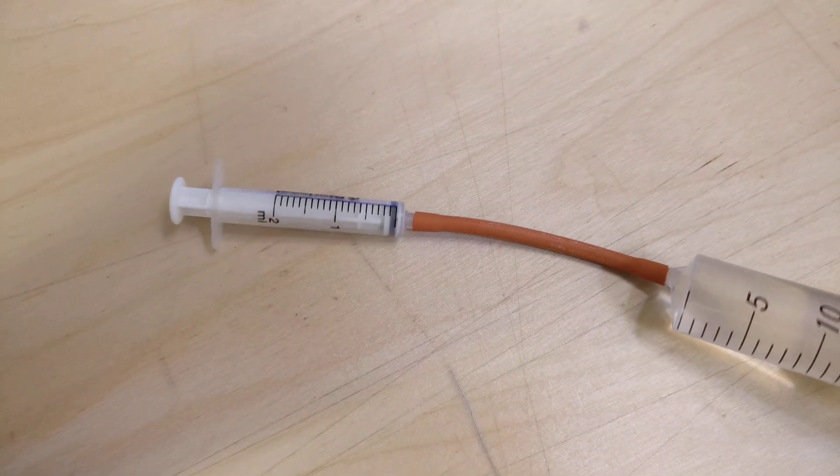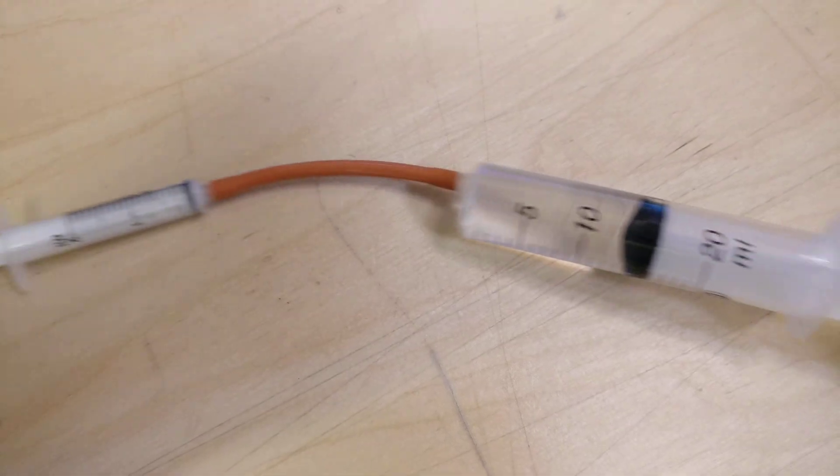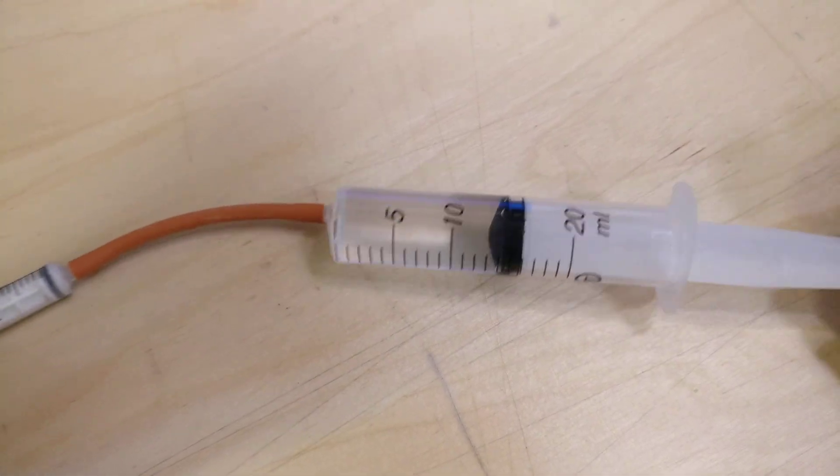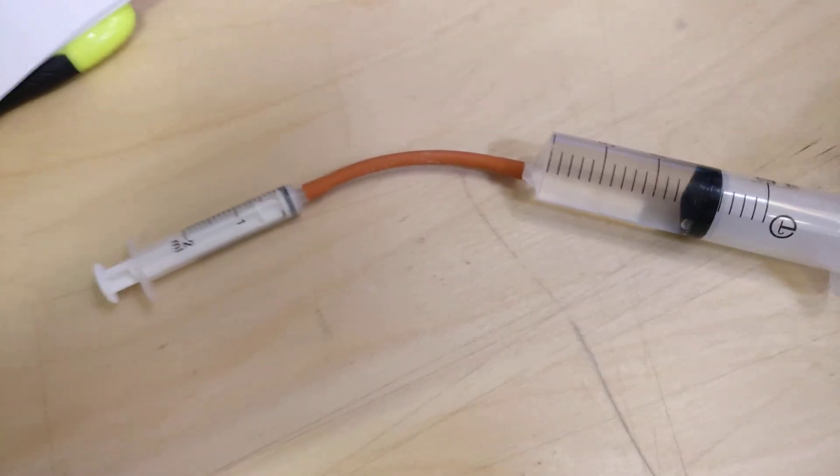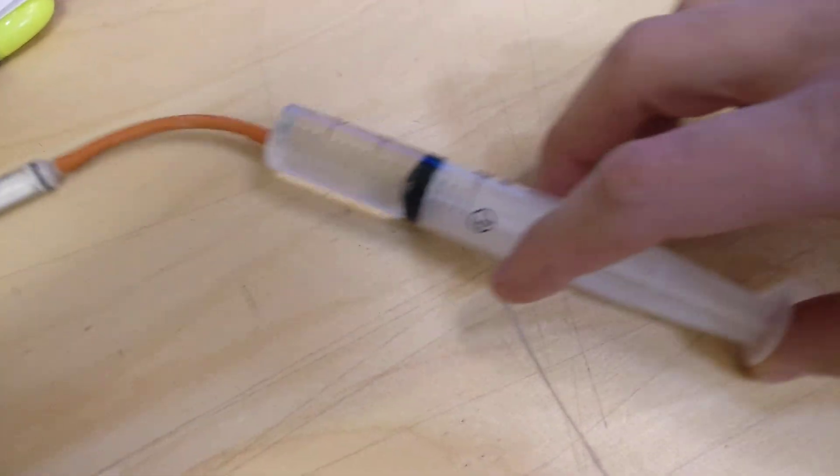So we've got a small syringe there. You can see milliliters at the sides, you've got two milliliters, and then a big syringe with 20 milliliters at the other side. Now I'm just gonna put a little bit of pressure.